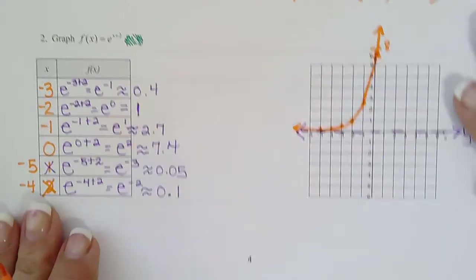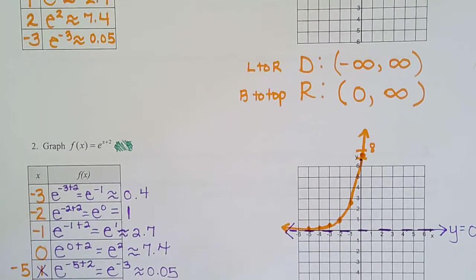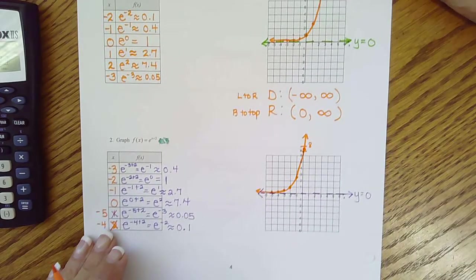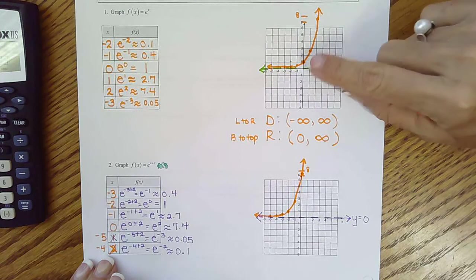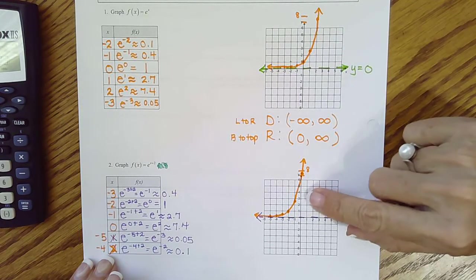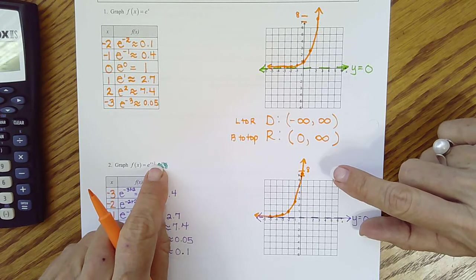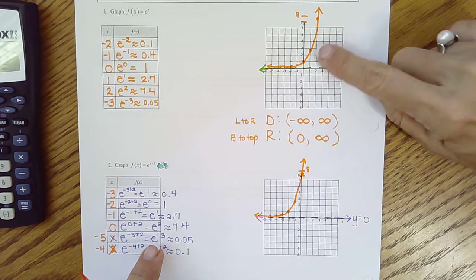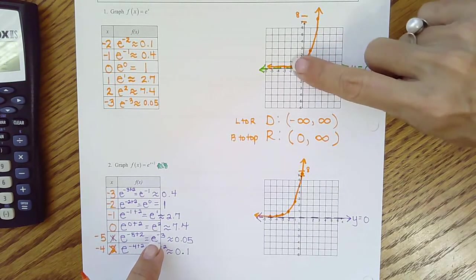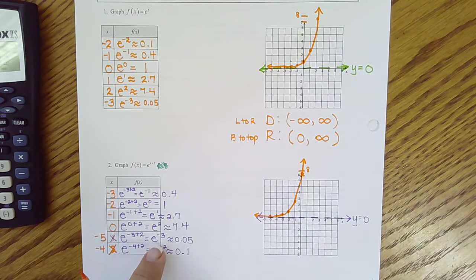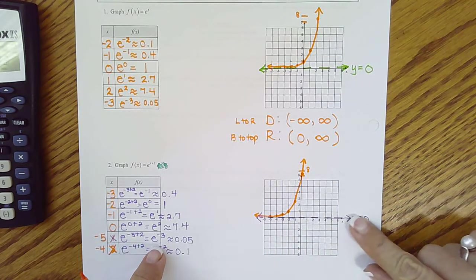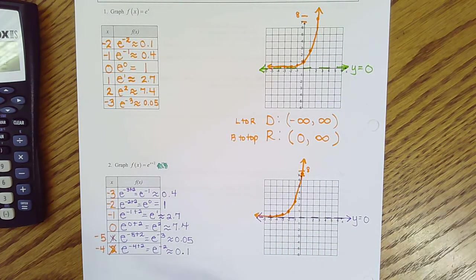There is our mother function. Now you can look at both of these together. Here's the mother function, and here's the mother function shifted left 2, which we knew happened because of the exponent. Same shape, just every point on this one has been shifted left 2 to produce this graph. Same horizontal asymptote, y equals 0.